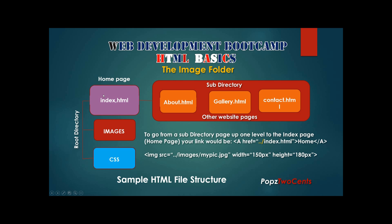To place a photo in the Gallery, we use the image tag with a source going up one level to a folder called images and grabbing a file called mypic.jpeg, with a width of 150 pixels by 180 pixels. To go up two levels, you would use dot-dot-slash dot-dot-slash, then the images directory or whatever directory you need to retrieve information from.